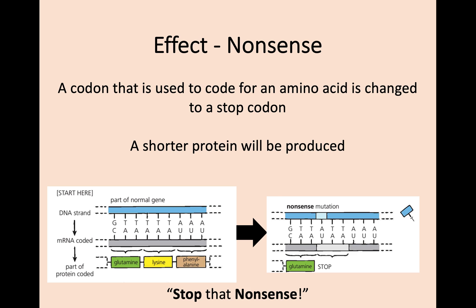Nonsense is similar — we have our substitution where an amino acid has been changed — but in nonsense it's been changed specifically to a stop codon, and that's really bad because a shorter protein is produced. Another quote to remember that one is: stop that nonsense. So if a stop codon has been created, that is a nonsense mutation, which is pretty bad.